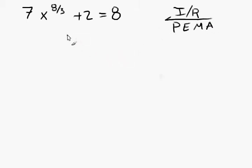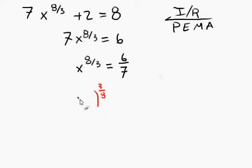In the reverse order, we subtract 2. Then we divide by 7. And now, we're going to apply the reciprocal power. So, that's the 3 8ths power to both sides of this equation. We'll fill in the rest of it around that.